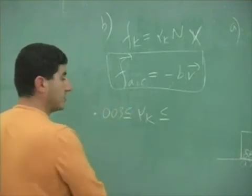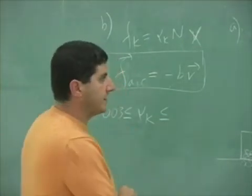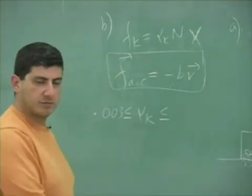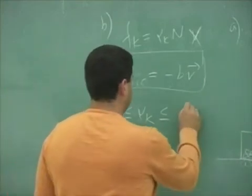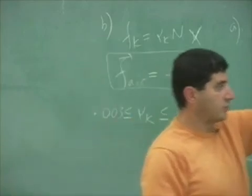0.003. Oh, is that the bones, the human bones? Yes. Oh, okay. And then the maximum? 0.8. That's the rubber on concrete, right? Okay, so that one was the same there. That was rubber on concrete for the one.